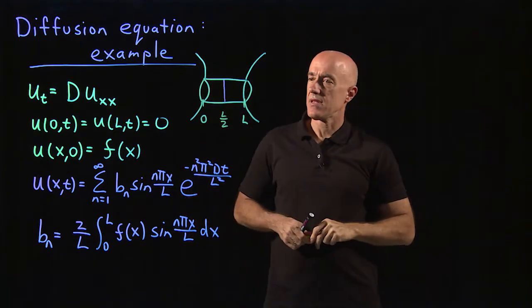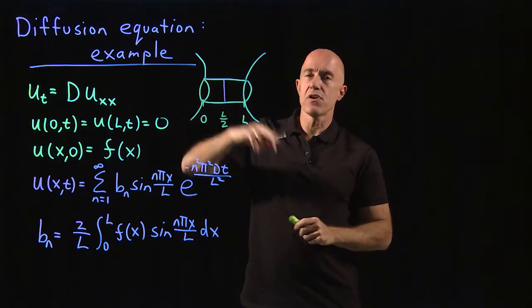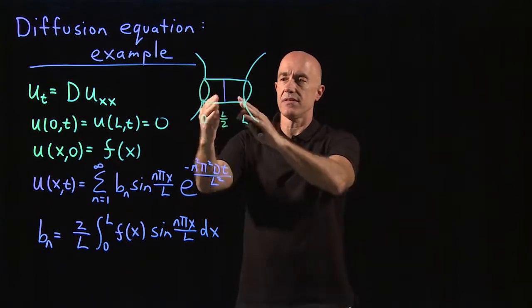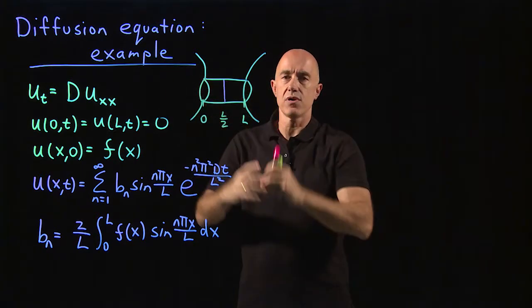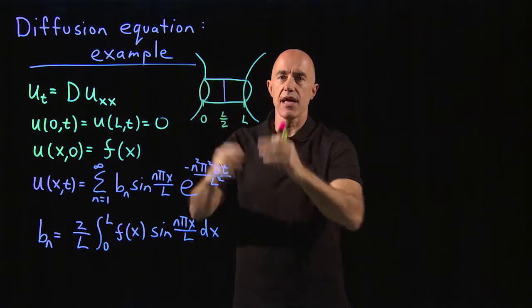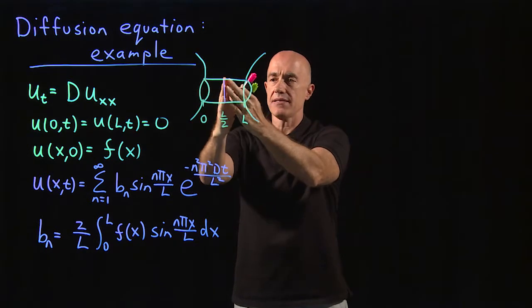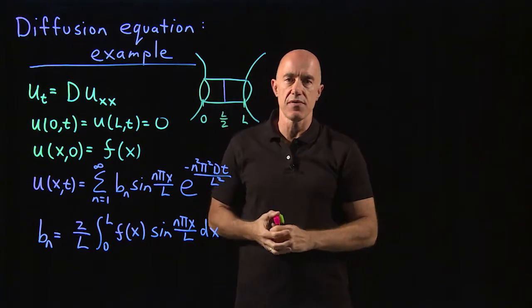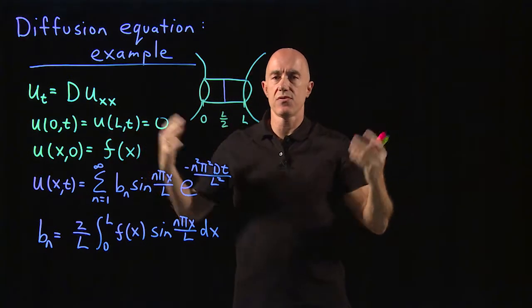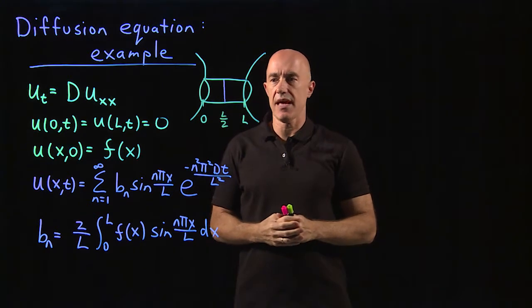Then we're going to look to see how does this dye then diffuse outward to the right and to the left. It will be symmetric. And eventually the mass of the dye that we've put into the pipe will diffuse out into the reservoirs in the end.